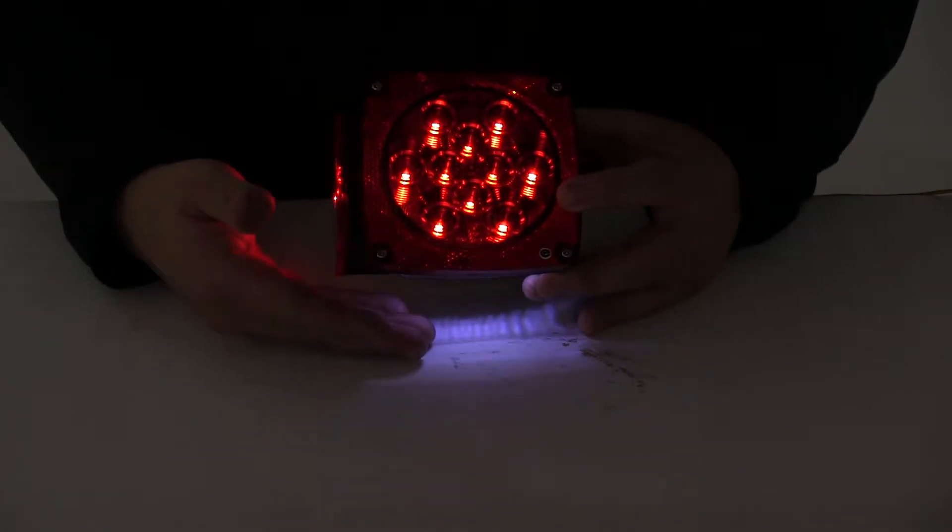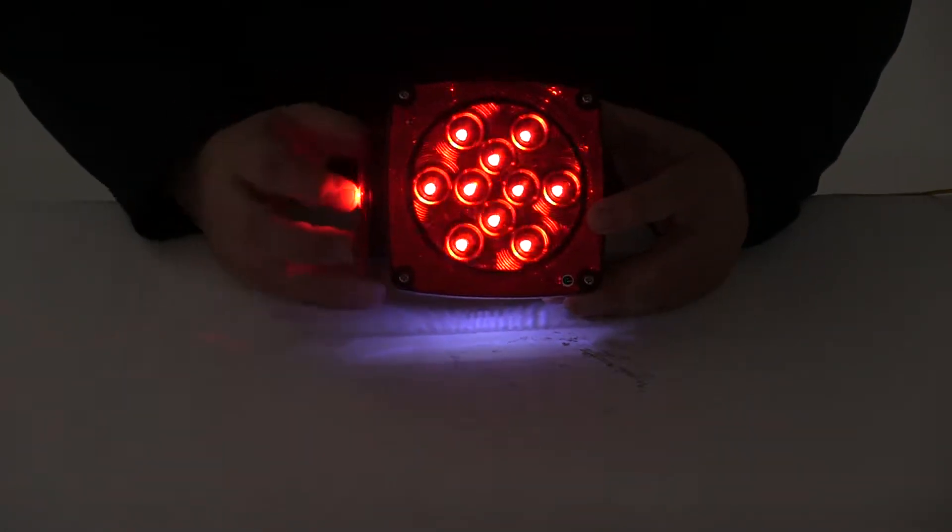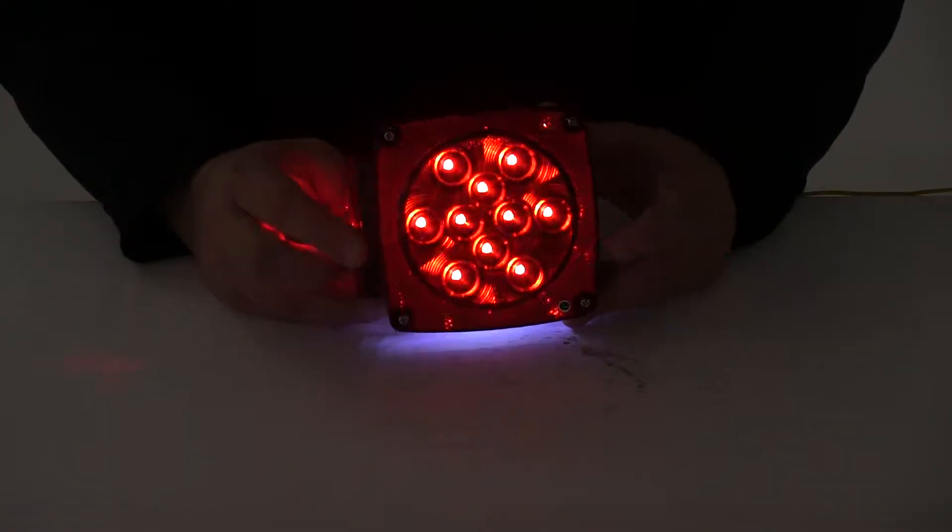We've got the license plate light here on the bottom that comes down and illuminates the license plate that would be mounted directly below the driver's side taillight.